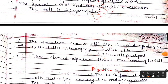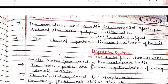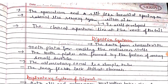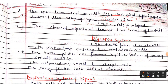The tail is diphycercal. I have told you the different types of caudal fins — what is diphycercal and heterocercal and all. The operculum and slit-like branchial opening are present on either side. The lateral line sensory system is well developed.